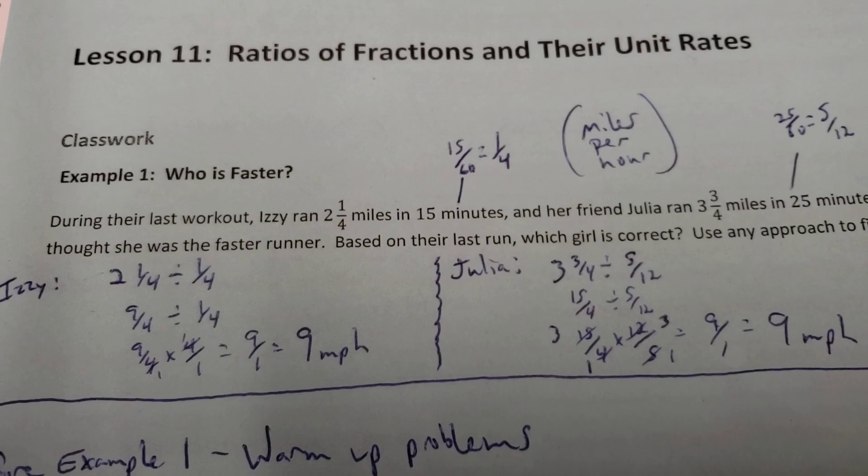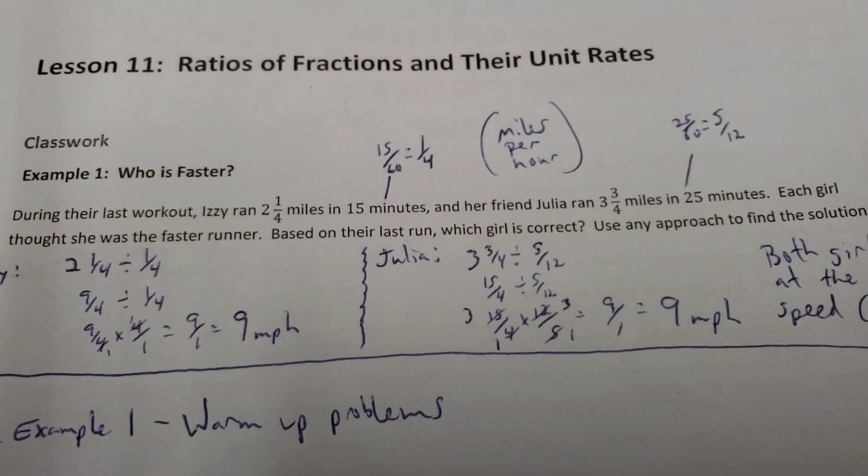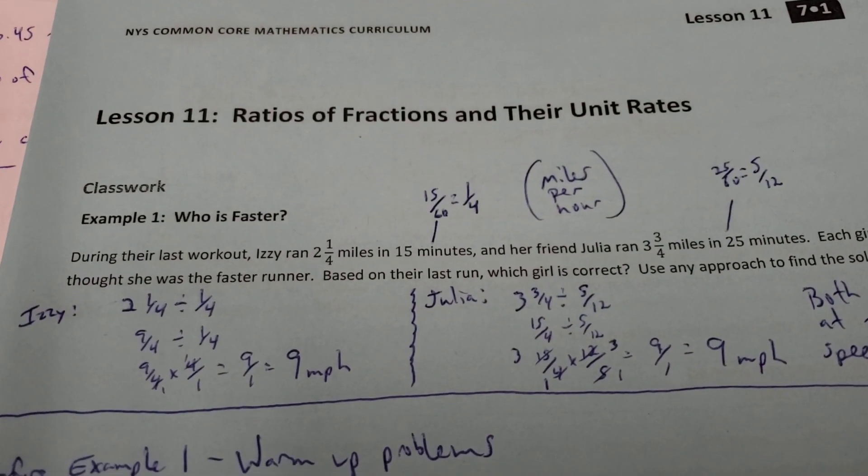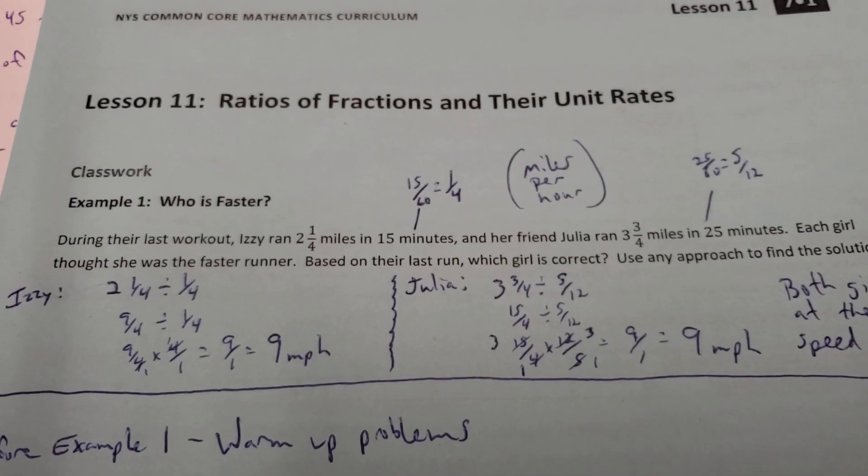During their last workout, Izzy ran 2 1/4 miles in 15 minutes, and her friend Julia ran 3 3/4 miles in 25 minutes. Each girl thought she was the faster runner. Based on their last run, which girl is correct? Use any approach to find the solution.